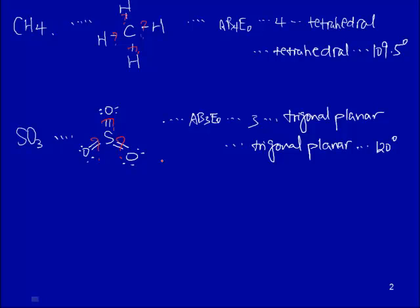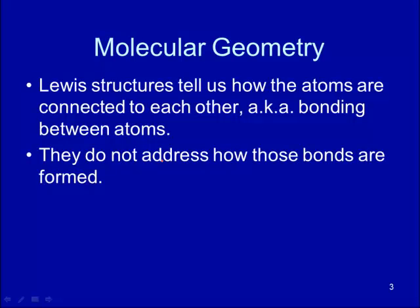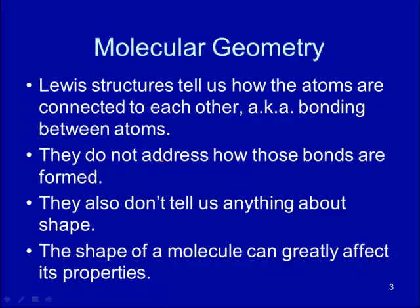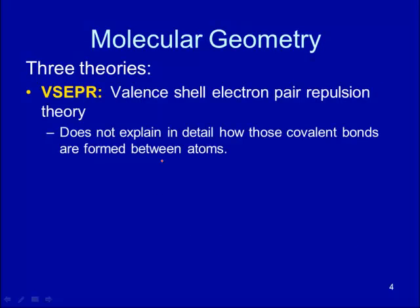A Lewis structure tells you how valence electrons are distributed among constituent atoms, but does not address the shape of the molecule or how bonds are formed. The shape of a molecule has very high significance in determining many properties. Generally, molecular geometry is addressed by about three theories: VSEPR, which focuses on electron groups around the central atom and their repulsions, determines shape, but still doesn't explain in detail how covalent bonds are formed.